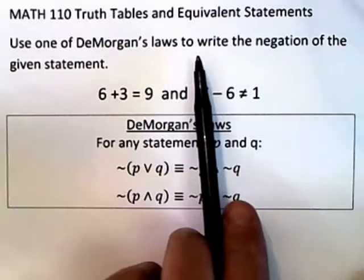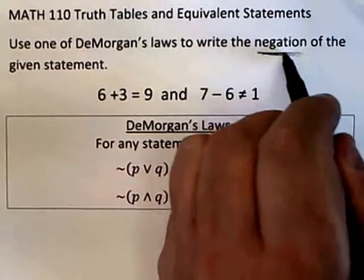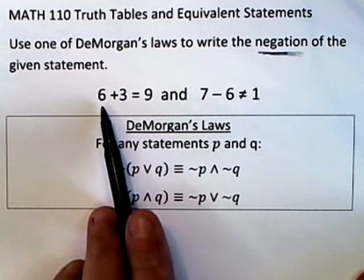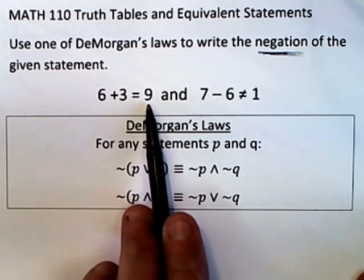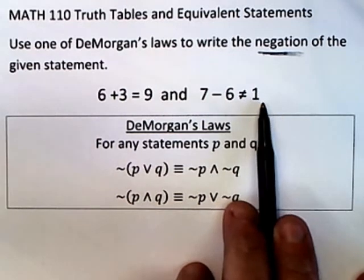Here we are asked to use one of DeMorgan's Laws to write the negation of the given statement. The statement is 6 plus 3 is equal to 9 and 7 minus 6 is not equal to 1.